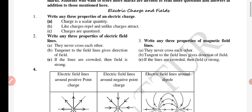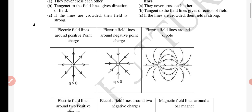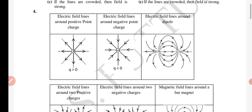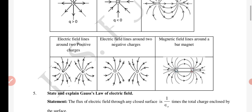Any three properties of magnetic field lines: they never cross each other, tangent to field lines gives direction of field, if the lines are crowded, then field is strong. Electric field lines and positive point charge - this diagram is needed.